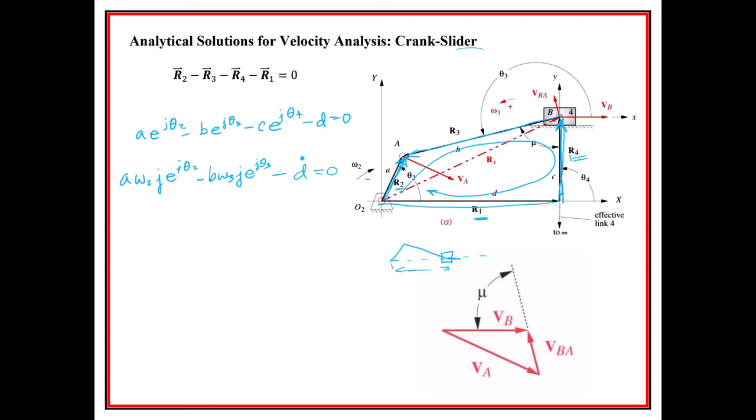From this vector diagram that we have down here, we would find that VA would be equal to... if we were having this VA, it's going to be equal to a*omega2*j*e^(j*theta2). Then we just use the Euler identity to break this down and get these components. Then what we'd have...